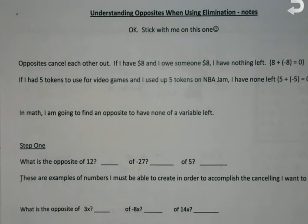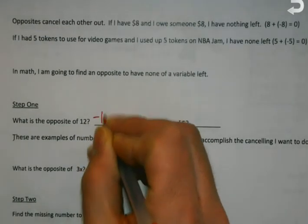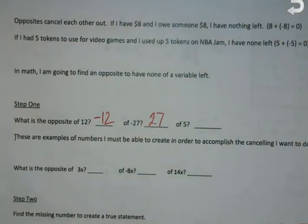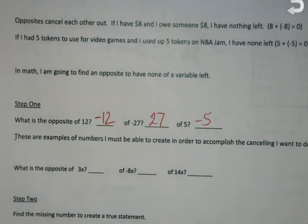So, for instance, what would the opposite of 12 be? Negative 12. Of negative 27? 27. Okay, of 5? Negative 5. Because when I put them together, they wipe each other out. That's the first step in understanding how elimination works. I always got to be able to figure out a way, well, if I want to have this, what's the opposite so they wipe each other out.